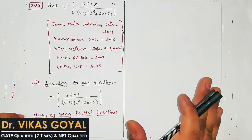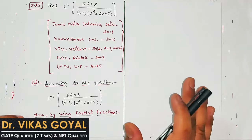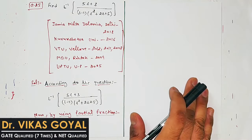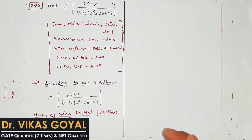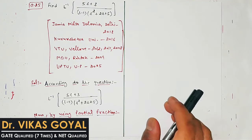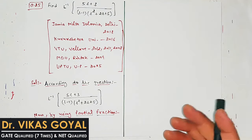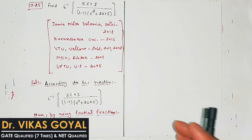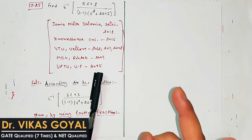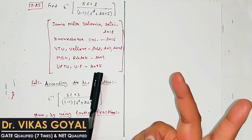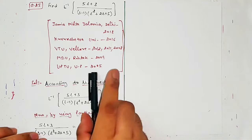We now have 4 video lectures on Laplace Inverse and hopefully we have covered the basics. In the last lecture we discussed that if you have a product, you can use partial fractions to separate and simplify it, and then individually find the Laplace Inverse. If you have a product, you have two options: first partial fraction, second convolution theorem, which is covered in later lectures.